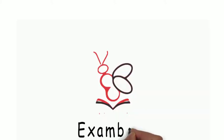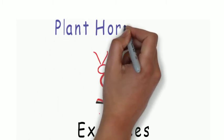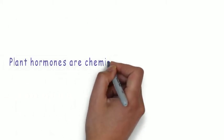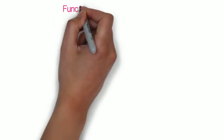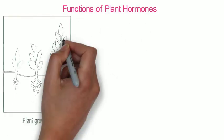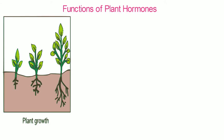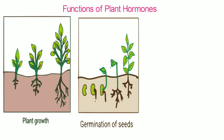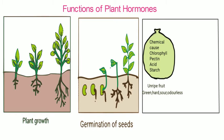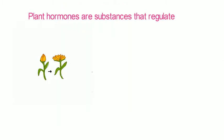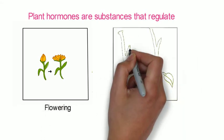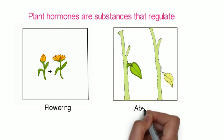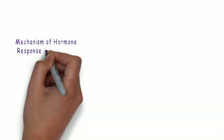Welcome everyone to another session of Exam Biz tutorial. Today our topic of discussion is plant hormones. In simple words, plant hormones or phytohormones are chemical substances that regulate different growth functions in plants. The main functions include growth and elongation of the plant body by cell division, breaking down dormancy followed by germination of seeds, and formation and ripening of parthenocarpic fruit — that is, seedless fruit. Besides these, plant hormones also induce flowering when conditions are favorable, and during unfavorable conditions, induce abscission of leaves or other injured parts of the plant body.